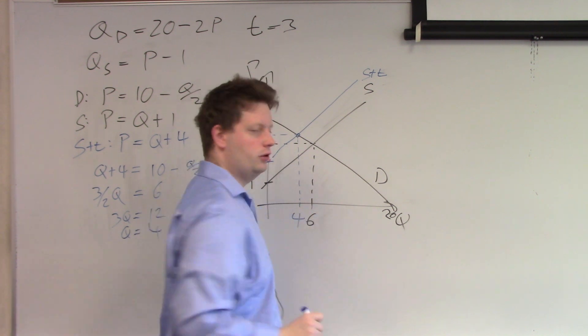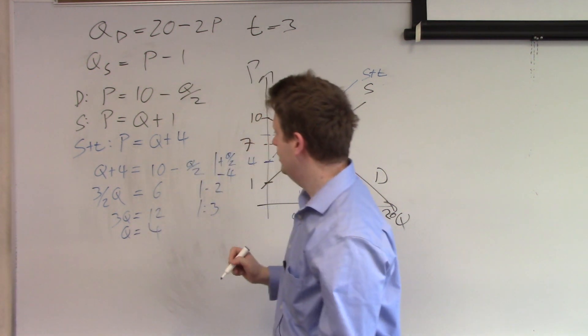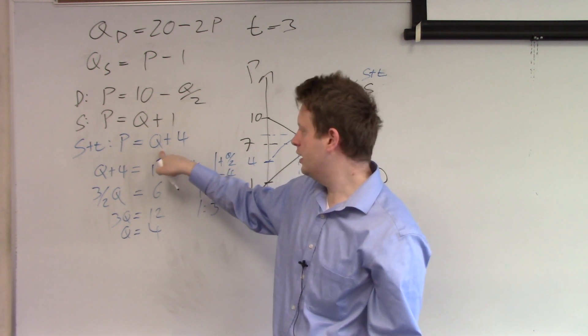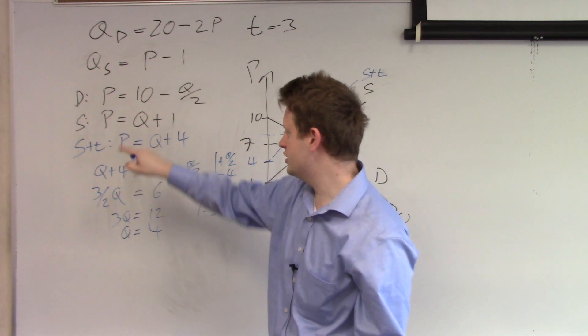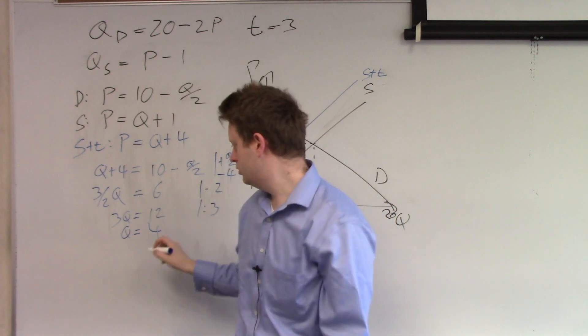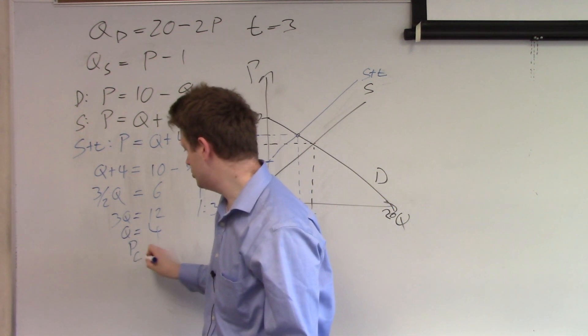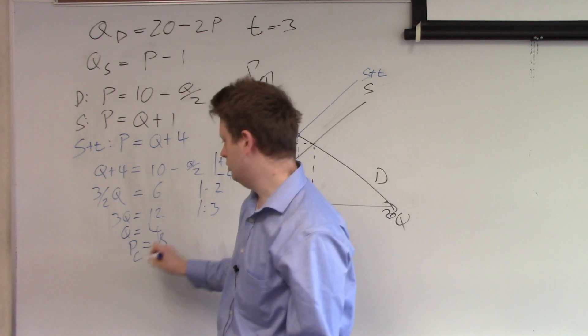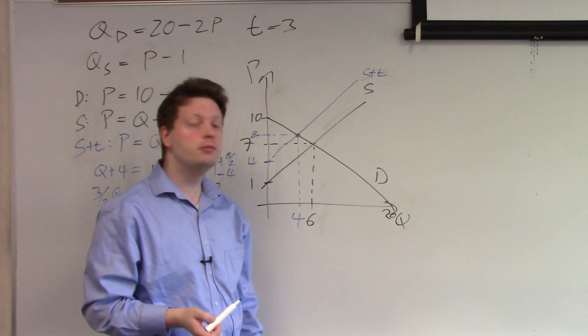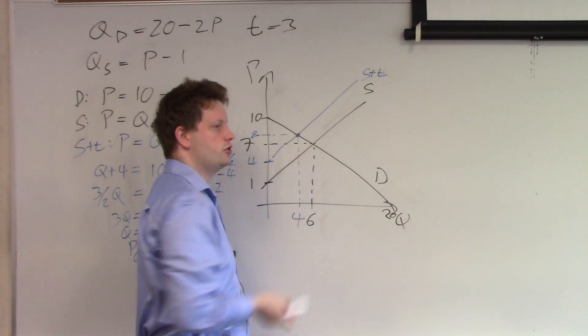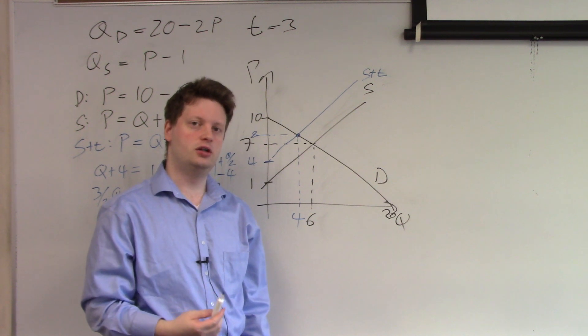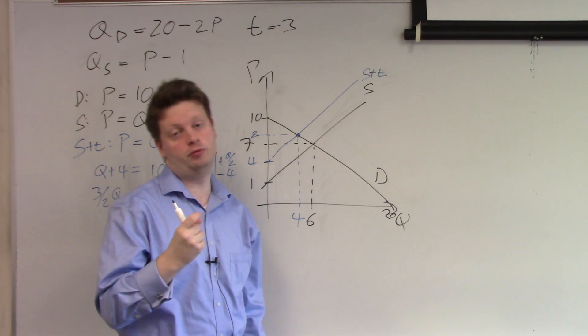So quantity here is 4 and I can plug it back into this new supply and I get 4 plus 4 is 8. So I get a price of 8 which is the price consumers pay. Note this price is not the market equilibrium because the price consumers pay is not the same as the price producers get. There will be a gap and that gap will be exactly the tax.